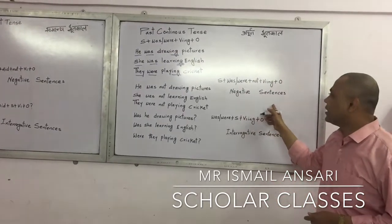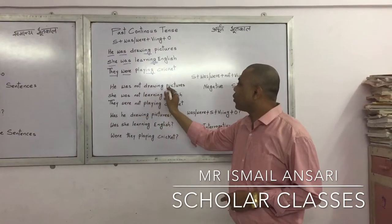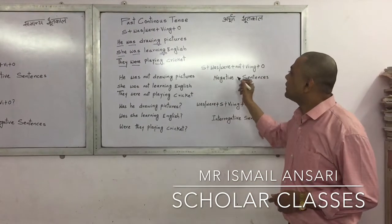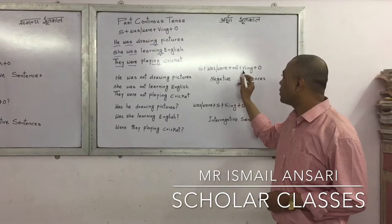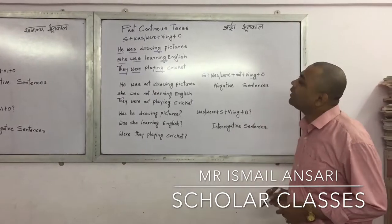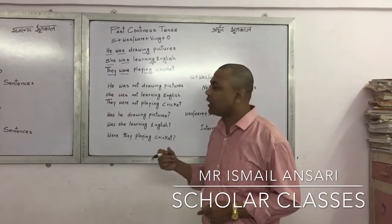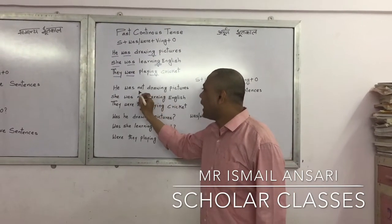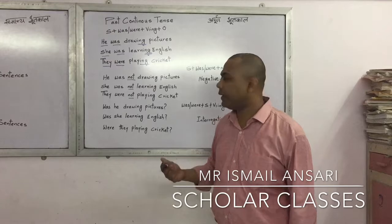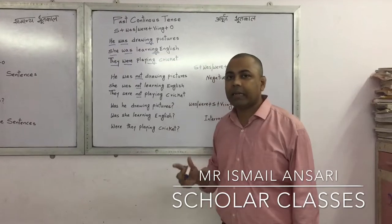Now we have negative sentences in past continuous tense. The formula is: subject plus was/were plus not plus first form of the verb with -ing plus object. Examples: He was not drawing pictures — 'Wo chitro ko nahi bana raha tha.' She was not learning English. They were not playing cricket — 'Woh cricket nahi khel rahe the.'